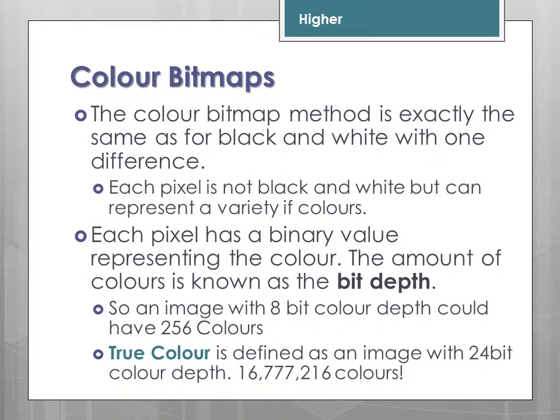Colour bitmaps work exactly the same as for black and white, with one difference: each pixel is not just black or white but can represent a variety of colours. Each pixel has a binary value representing the colour, and the range of colours available is known as the bit depth. An image with 8-bit colour depth can represent 256 colours, since 8 bits gives a maximum decimal value of 255, and we start counting from 0.